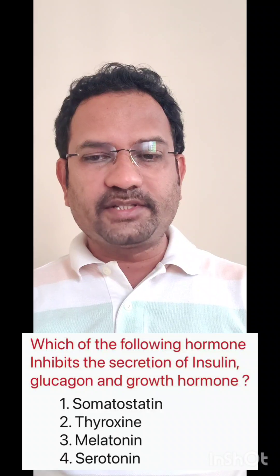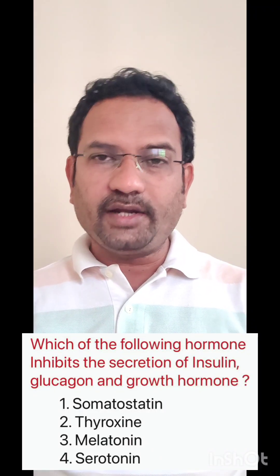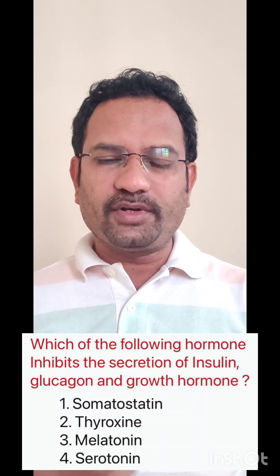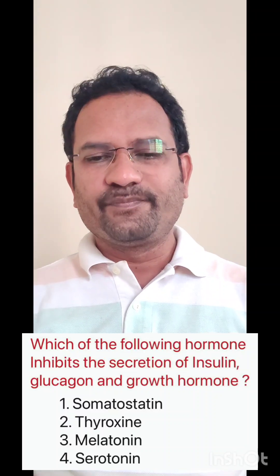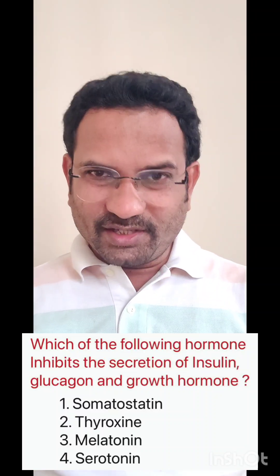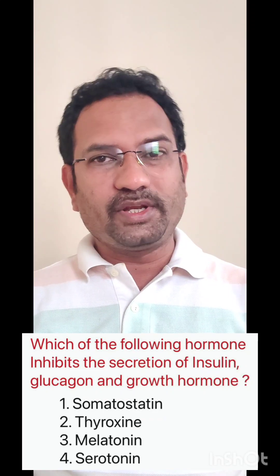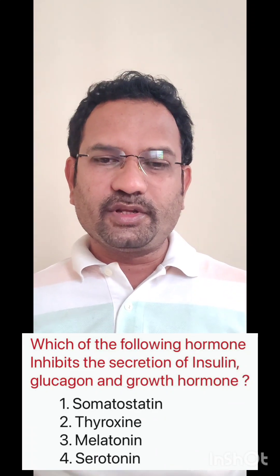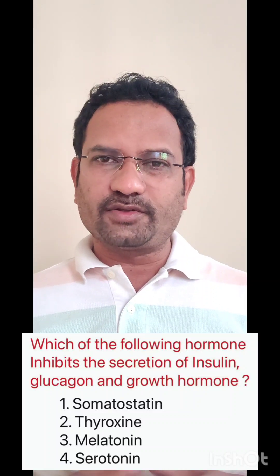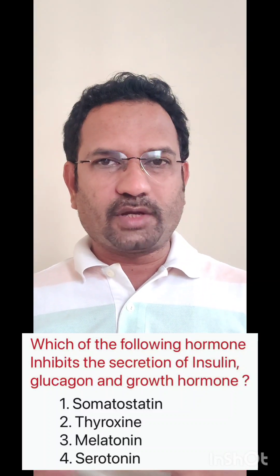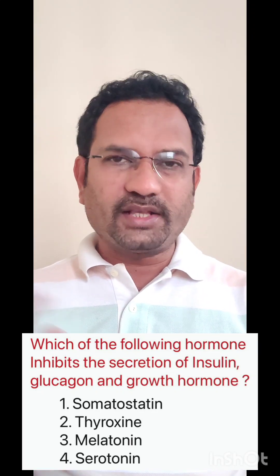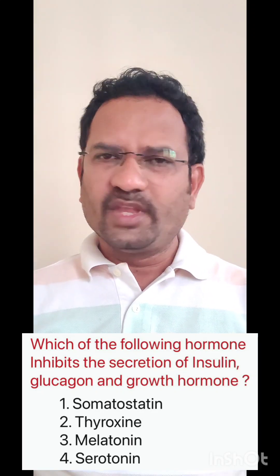Let us move on to the next question. Which of the following hormone inhibits the secretion of insulin, glucagon, and growth hormone? Options given are: somatostatin, thyroxine, melatonin, serotonin. Somatostatin is also known as growth hormone inhibiting hormone. Not only that, somatostatin also inhibits insulin and glucagon release. So pancreatic hormones as well as growth hormone release are all inhibited by somatostatin. The answer is option number 1, somatostatin.